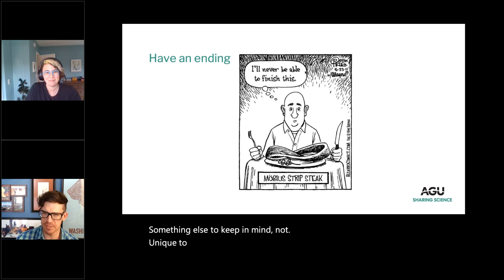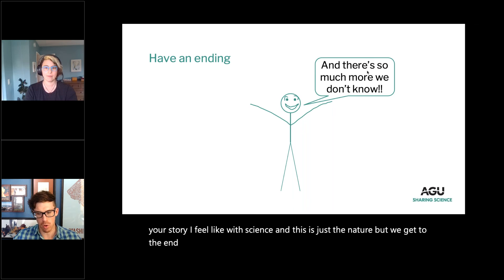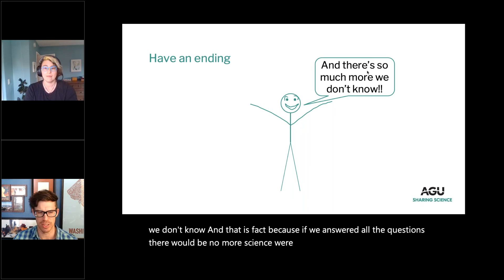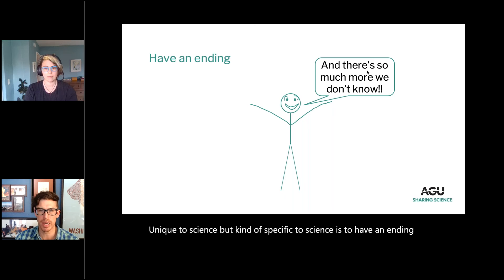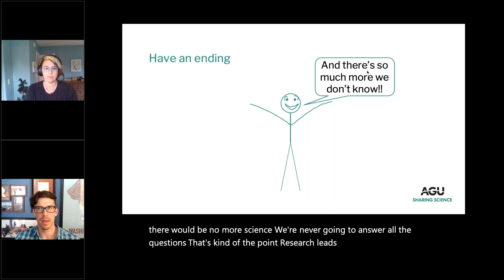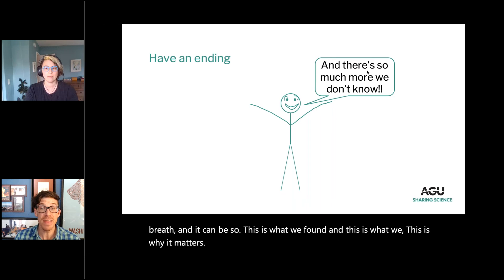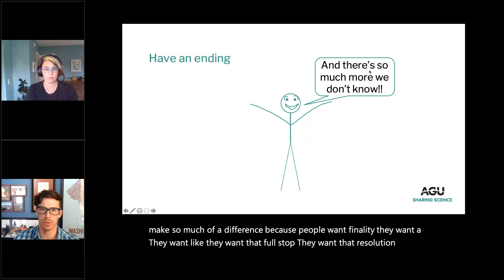Something specific to science: have an ending with your story. In science we often get to the end and say 'there's so much else we don't know' — which is true, because research leads to answers but also leads to more questions. But sometimes it's as simple as putting a period at the end of the sentence — a full stop. This is what we found, this is why it matters, and from that we're going to do X, Y, or Z. That breath can make so much of a difference, because people want finality, they want that resolution before you move on.